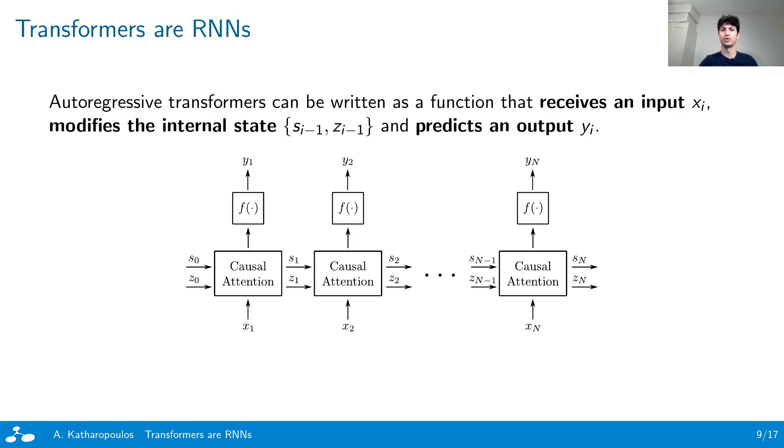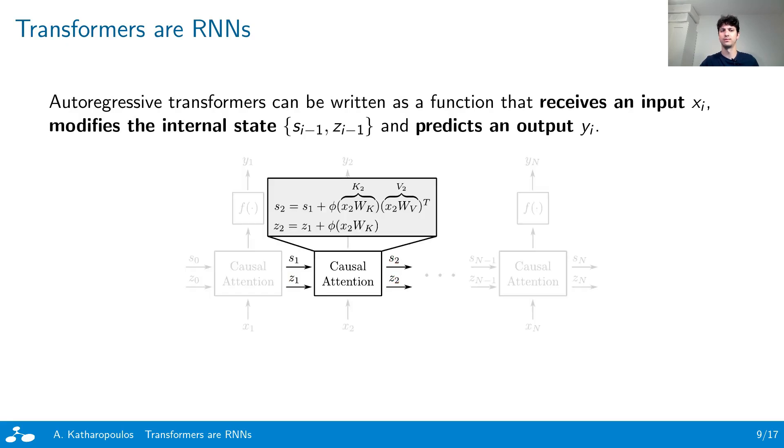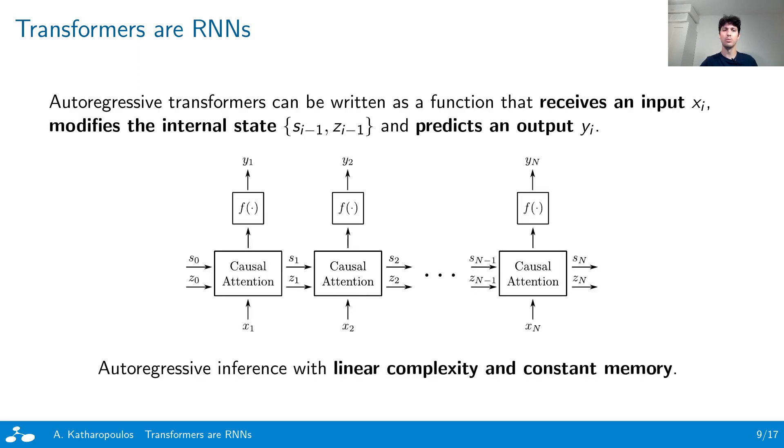Using the previous autoregressive formulation, we can now express the transformer layer as a recurrent neural network. The state for our transformer RNN is simply the S_i and Z_i that we need to perform the attention computation. Computing S_{i+1} and Z_{i+1} given the previous state requires a constant amount of time irrespective of the position in the sequence, as it is simply the product of the new key and value added to the previous state. Moreover, the state of our RNN has fixed dimensions, which means that we can perform autoregressive inference with linear complexity and constant memory.